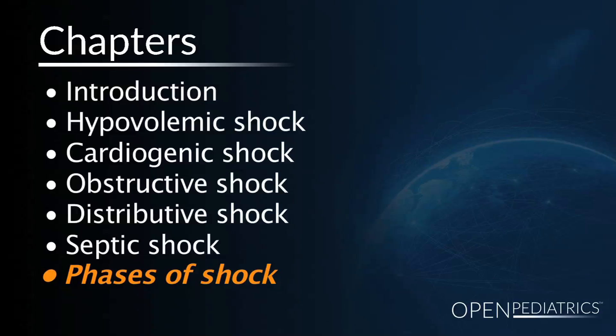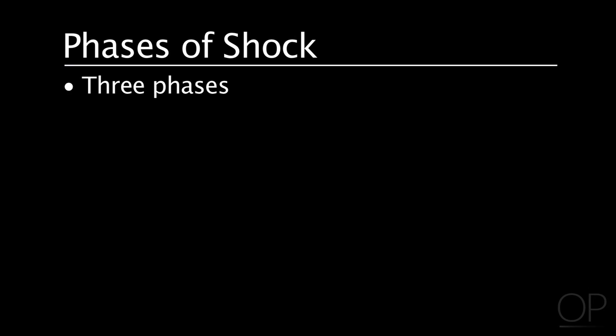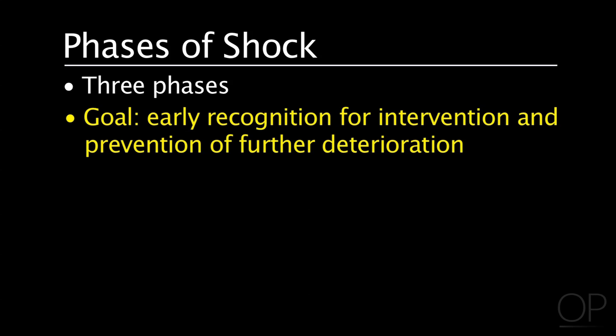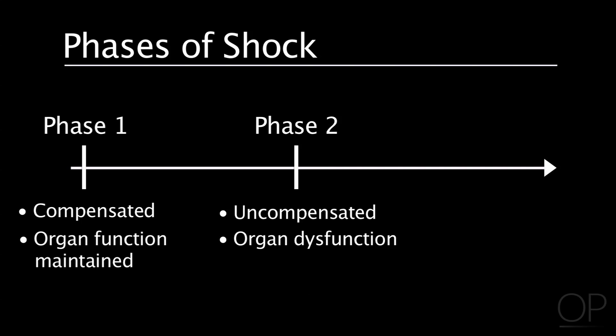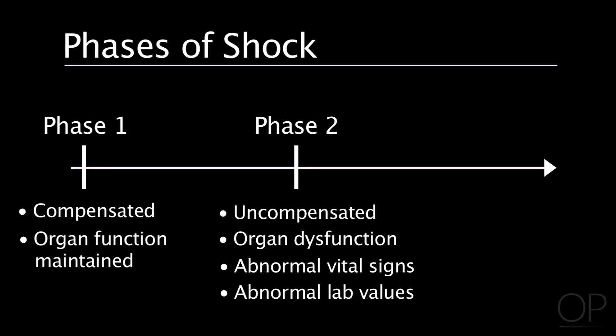Shock typically has three phases, and the goal of evaluation and management is to recognize shock early and intervene to prevent its progression. The first phase is compensated, where organ function is maintained. The second is uncompensated, where you start to see organ dysfunction, abnormal vital signs, and abnormal lab values. Finally, irreversible shock — which we are clearly looking to prevent. Shock is a dynamic process, and patients need multiple serial exams throughout their course to be properly evaluated.